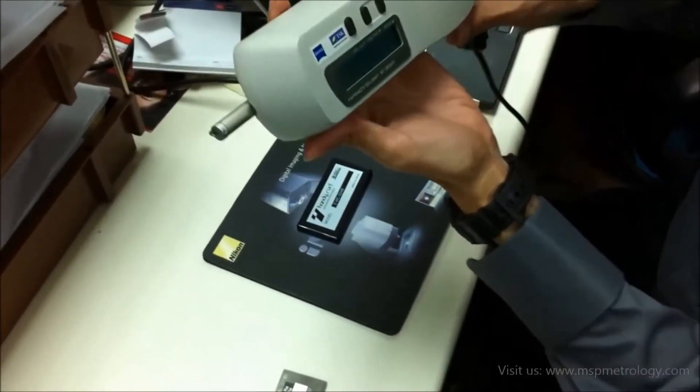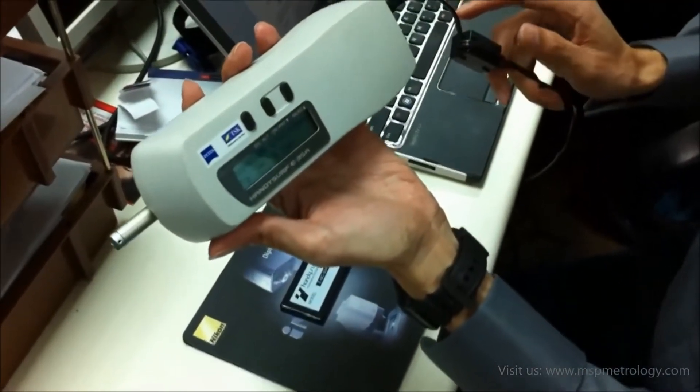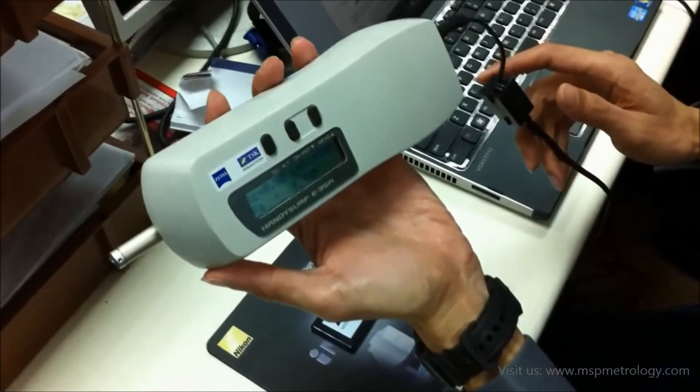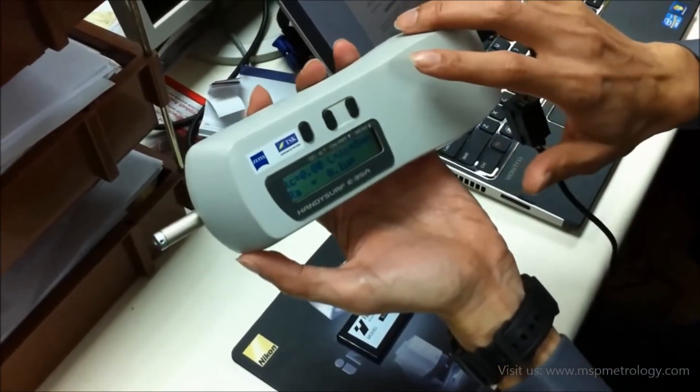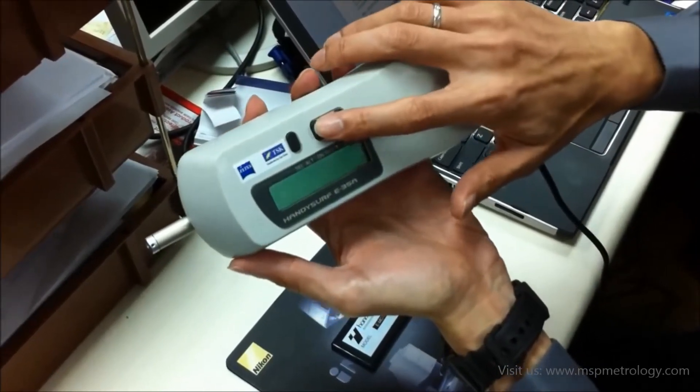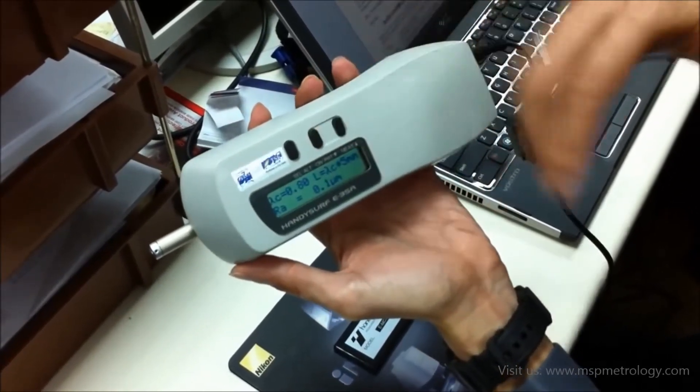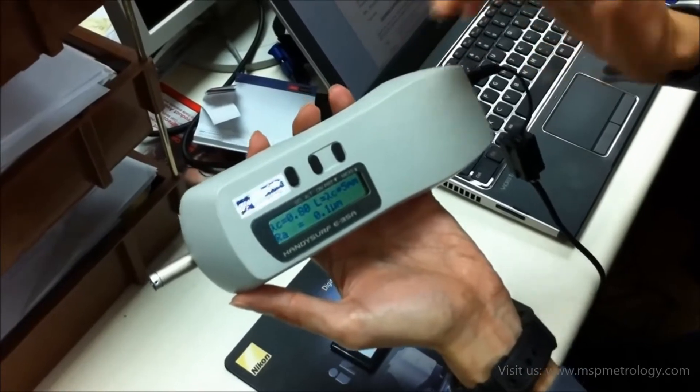First, I'd like to introduce our portable surface roughness tester, known as the HandyServe E35A. The first thing to do is press the on button to turn on the instrument.